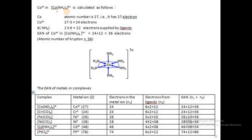For Co3+ in [Co(NH3)6]3+: cobalt has atomic number 27, so Co3+ has 27 − 3 = 24 electrons. Six ammonia ligands contribute 12 electrons. So the effective atomic number = 24 + 12 = 36, which equals the atomic number of krypton. The complex obeys the effective atomic number rule.